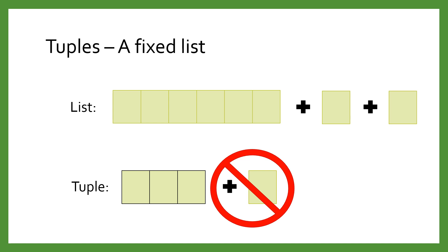A list is meant for data where you need an unknown or changing number of things. A tuple is meant for data where you have a fixed number of things.